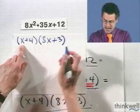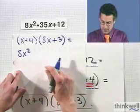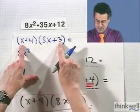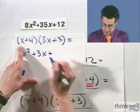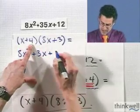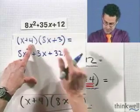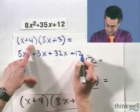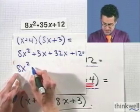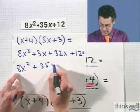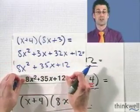Here we go. Well, I have x times 8x. That equals 8x². And then the outside terms produce a plus 3x. The inside terms produce a 32x. And then the last times the last is a plus 12. And when I combine the like terms in the middle, I see 8x² + 35x + 12.